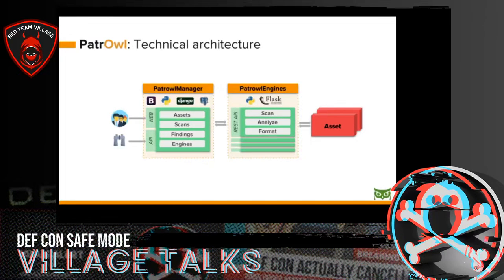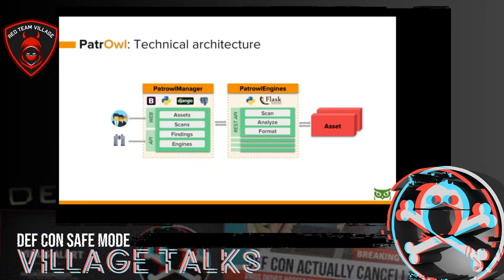Patrol is composed of two independent types of application. The first one, on the left, is the Manager — the front-end application where you have your dashboard, manage your assets, define your scans, review your findings, and manage the engines. The engines are the micro-applications that perform the scans. All of this is open source and developed with Python. All features are reachable through the web UI or the REST APIs. The Patrol engines process, analyze, and format the findings into a unique pivoting format and can be deployed on separate nodes and scaled that way.